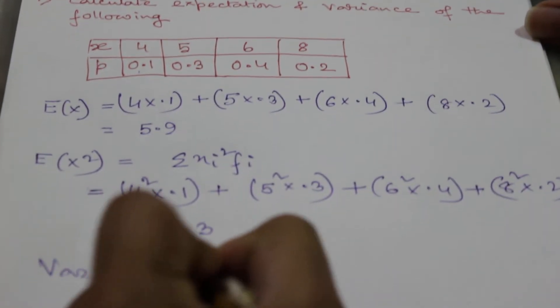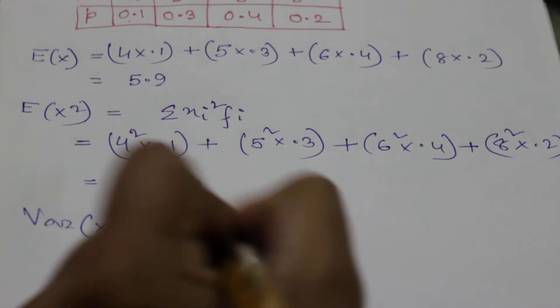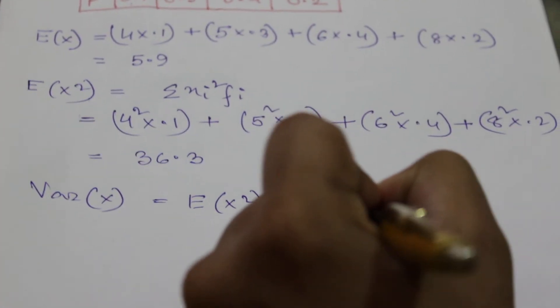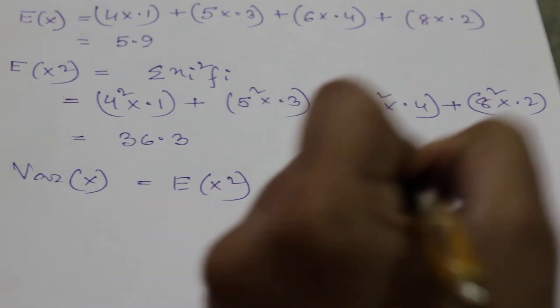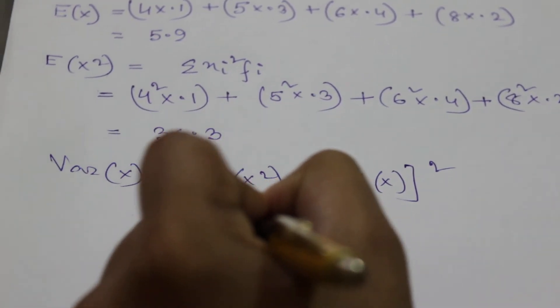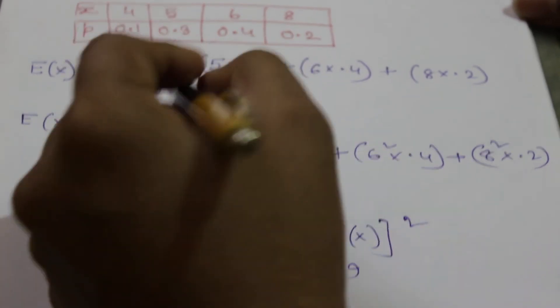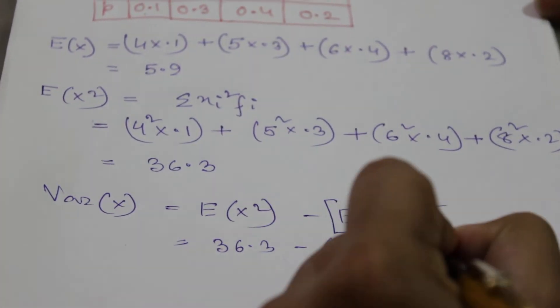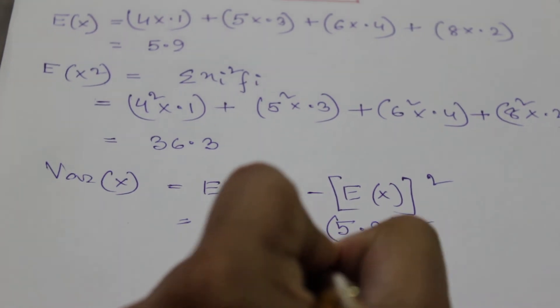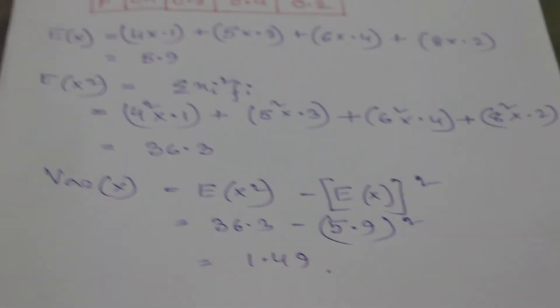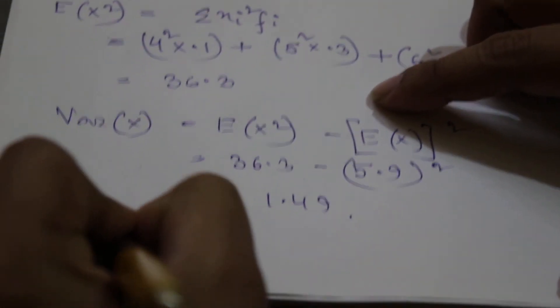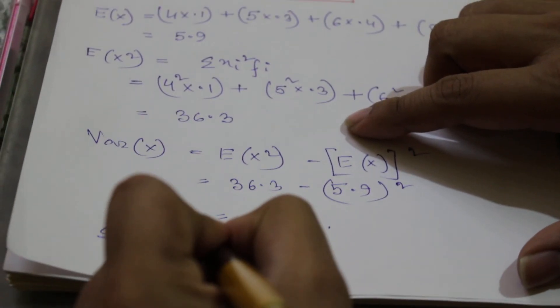So this will be 36.3 minus 5.9 whole square. So the final result is 1.49. And if they now want standard deviation, standard deviation is just the square root of variance.